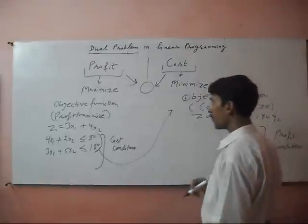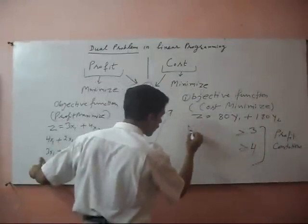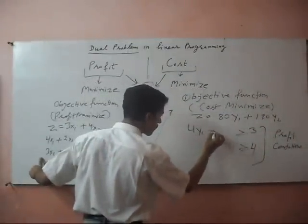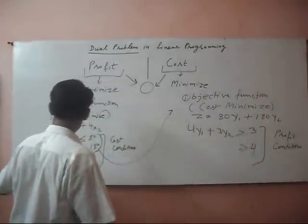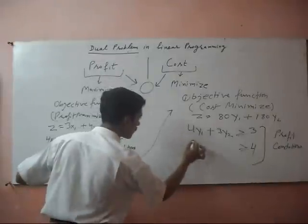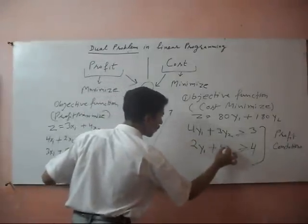If you need to be confused, we can add 3 and 4, this is 4. This is 4 and 3. 4y1 plus 3y2. 2y1 plus 5y2, this is 2y1 plus 5y2.